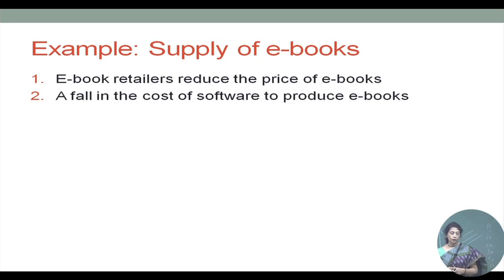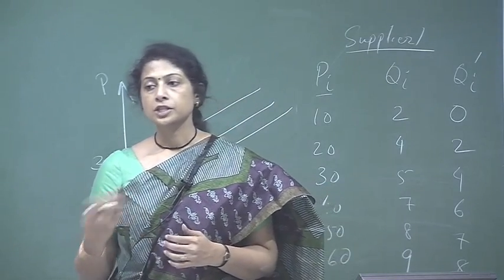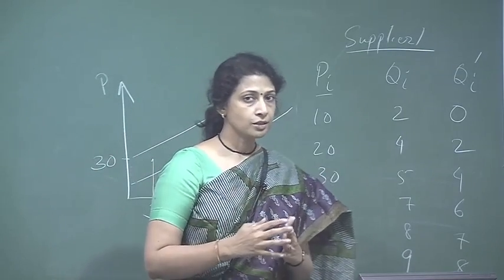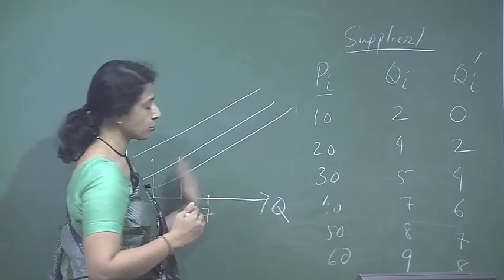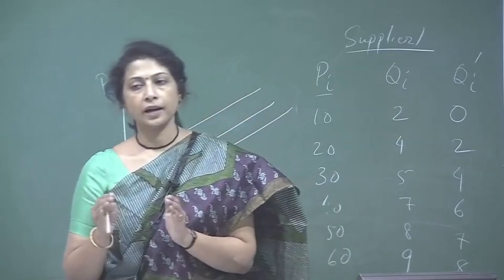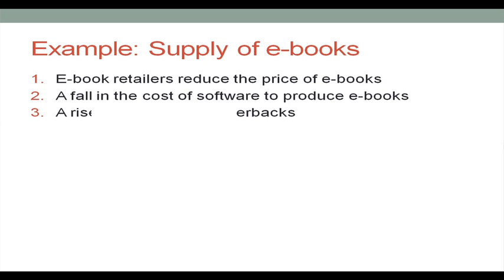What happens if there is a fall in the cost of software used to produce e-books? It is becoming cheaper to produce e-books. In that case, the supply curve shifts to the right — at each price, the supplier is able to supply more e-books. This is a rightward shift of the supply curve due to a reduction in input costs.